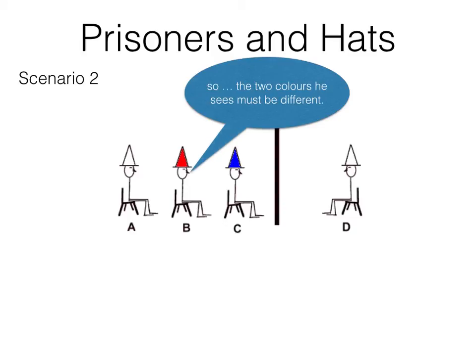Prisoner B should then come to the conclusion that the reason for A's silence is because the colours of the hats on prisoners B and C are different.